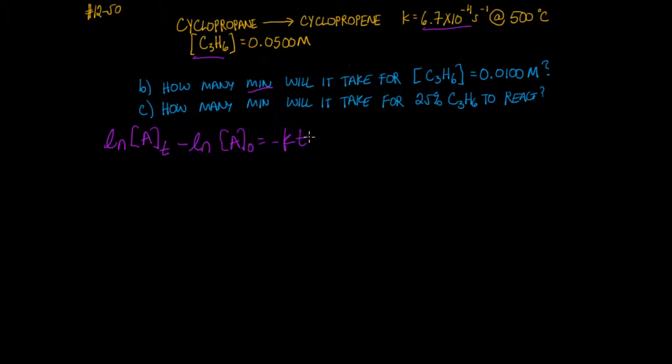And we're interested in the time here. So divide both sides by negative k. And we have this equation to work off of now. And so now we just plug in the concentrations and the rate constant here from the problem.